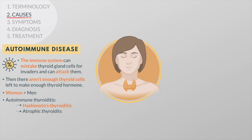Thyroiditis can make the thyroid dump its whole supply of stored thyroid hormone into the blood at once, causing brief hyperthyroidism followed by hypothyroidism.